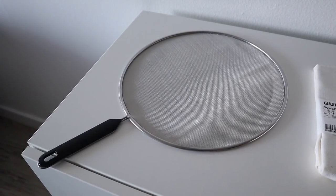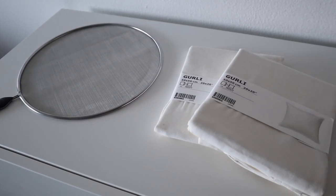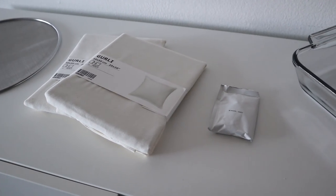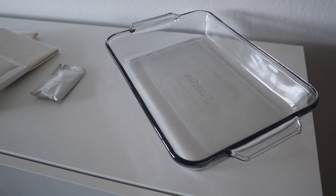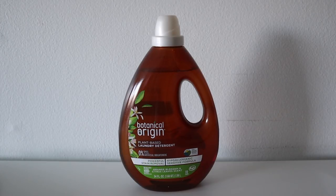For this first IKEA hack you're going to need some metal netting or metal mesh, plain pillows, fabric dye, a glass container, and Botanical Origins laundry detergent. This stuff is plant-based and absolutely amazing, so a huge thank you to them for sponsoring today's video.